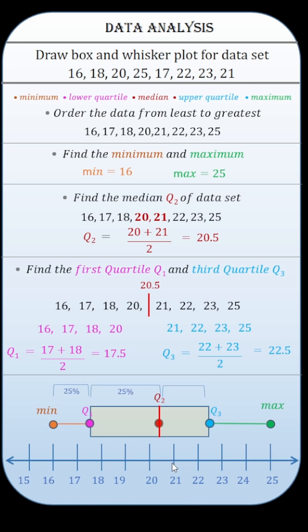And the box and the whisker plot divide the data into 4 equal parts and each part represent 25% of data.